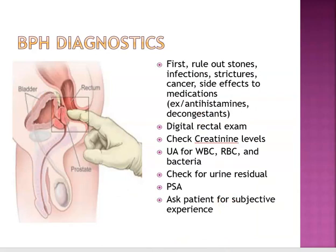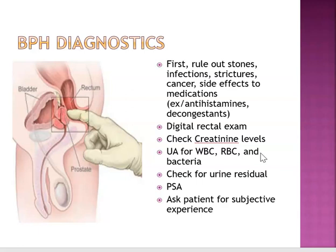With BPH, the first thing they're going to do is rule out any other causes, since there are other issues that could be reversible. There is no way to reverse BPH itself. You're going to perform a digital exam, check their labs — creatinine levels, urinalysis for WBCs, RBCs, and bacteria — and then check a urine residual.